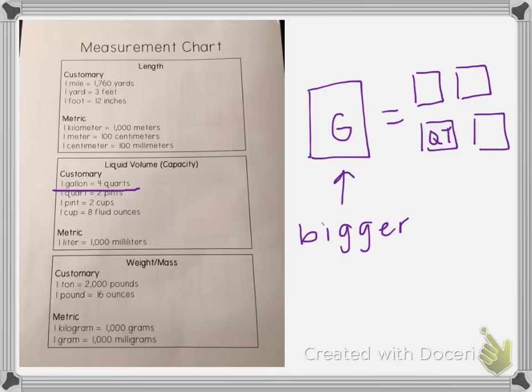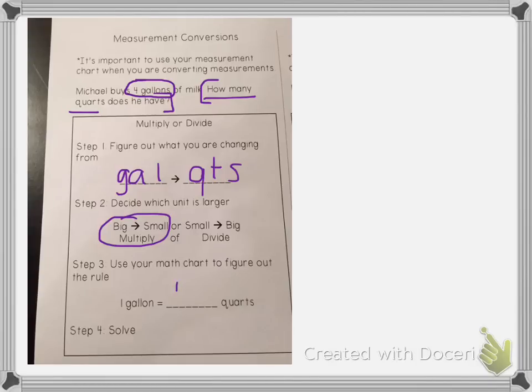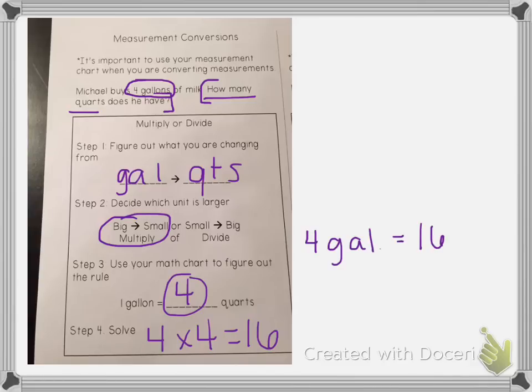So one gallon equals four quarts. So we are going to multiply the number of gallons we started with which is four times this number which is also four. Four times four is 16. So that tells us that four gallons equals 16 quarts.